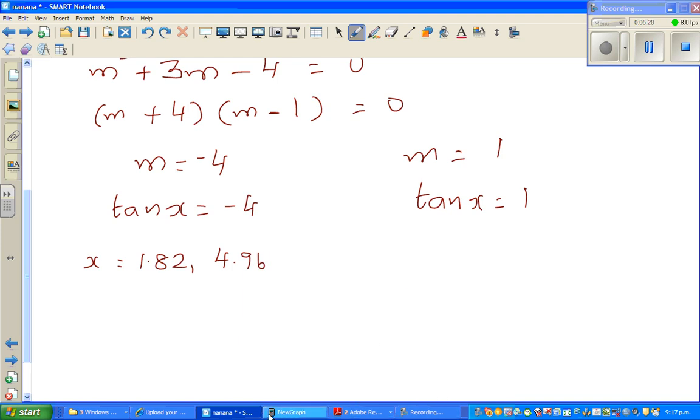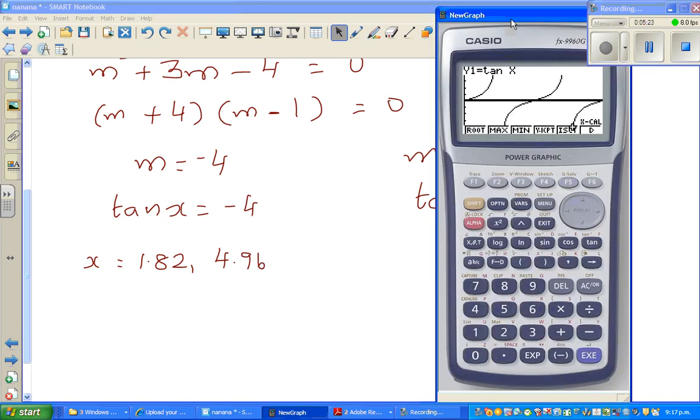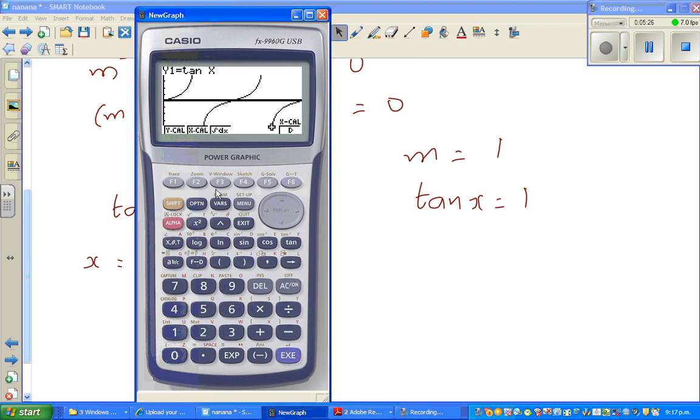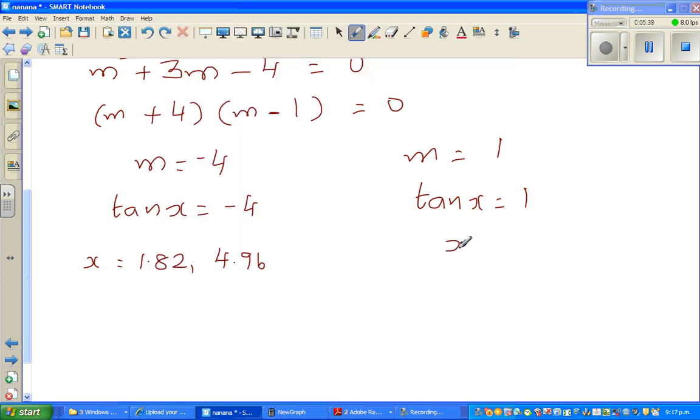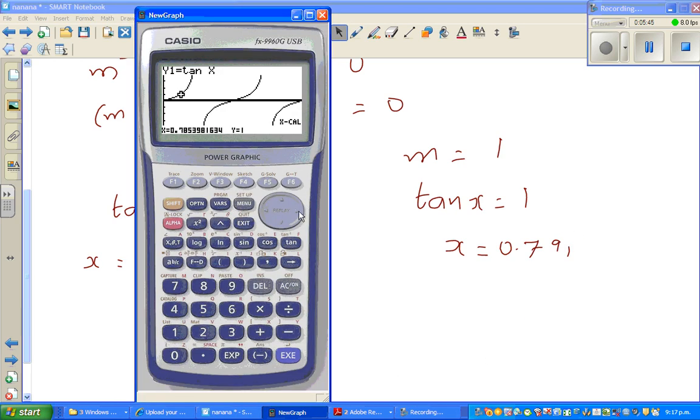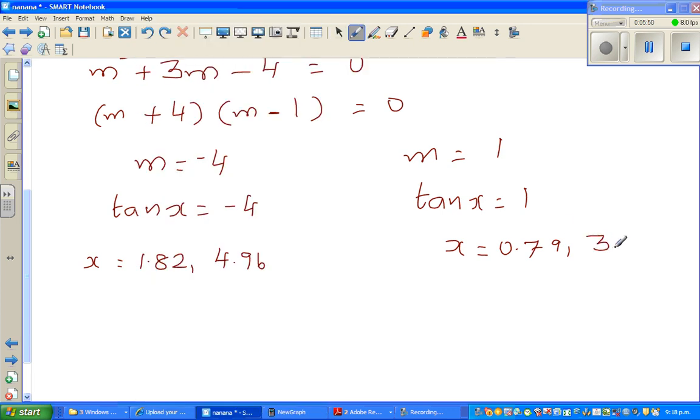And here again, g-solve. I want to find x when y is 1. So it's 0.79. So x = 0.79. You have one more value. If you press replay, this is 3.93. All of them are in 2 decimal places.